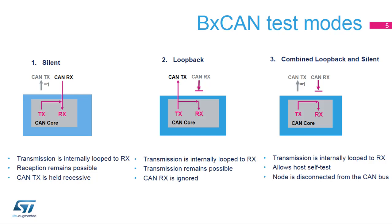In loopback mode, the BX CAN treats its own transmitted messages as received messages and stores them, if they pass acceptance filtering, in a receive mailbox. Loopback mode is provided for self-test functions. In the combined loopback and silent mode, the BX CAN can be tested in loopback mode but without affecting the running CAN system connected to the CAN-TX and CAN-RX pins.